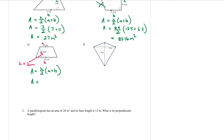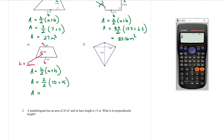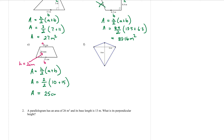Now we can use our formula: area equals h over 2, bracket a plus b. Substituting in: the height in centimetres is 2, so 2 over 2, bracket a is 10 and b is 15. Calculating: 2 over 2 is really just 1, times 10 plus 15, which makes 25 centimetres squared.